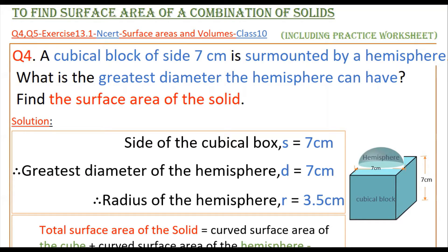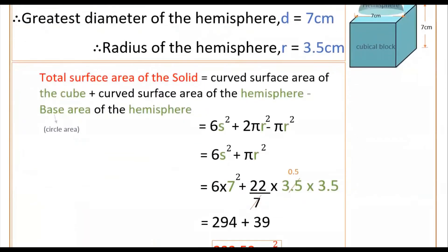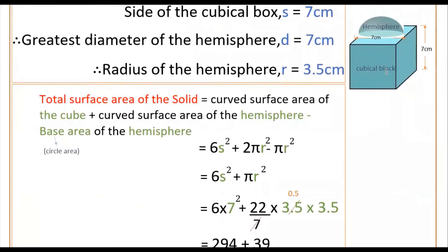Total surface area of the solid equals curved surface area of the cube plus curved surface area of the hemisphere minus the base area of the hemisphere. We subtract the base area because the hemisphere sits on top of the cube, so that base is not exposed. The formula is: 6s² + 2πr² − πr², which simplifies to 6s² + πr².